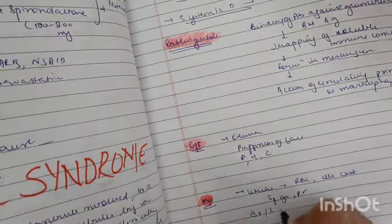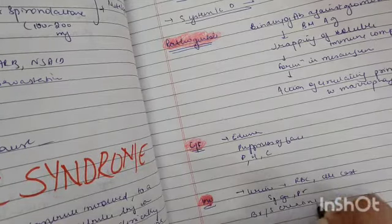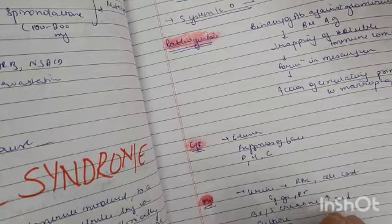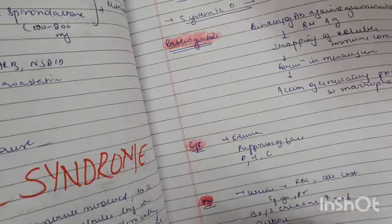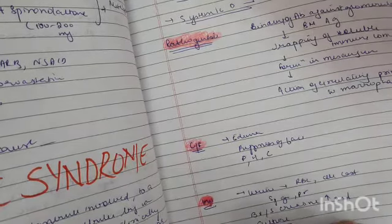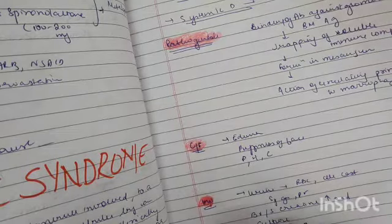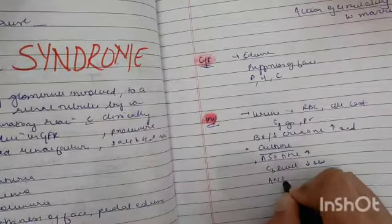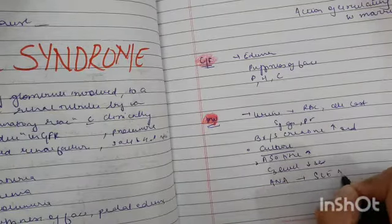Blood urea and serum creatinine can be increased. Culture for infectious etiology. ASO titer will be increased. C3 level will be decreased. ANA (anti-nuclear antibodies) will be seen in SLE nephritis.